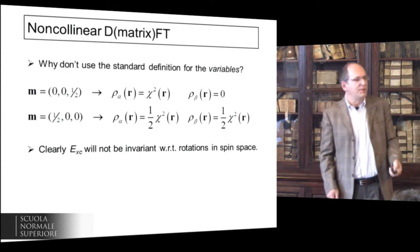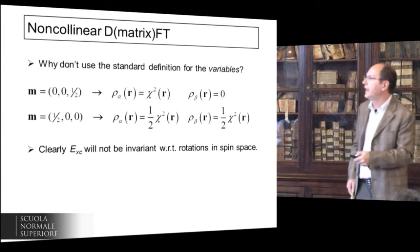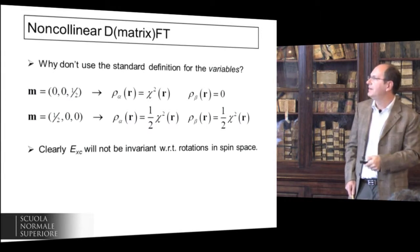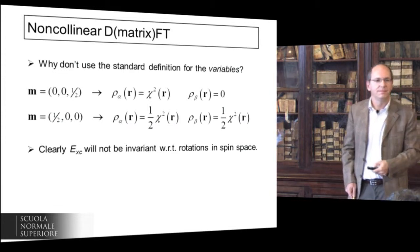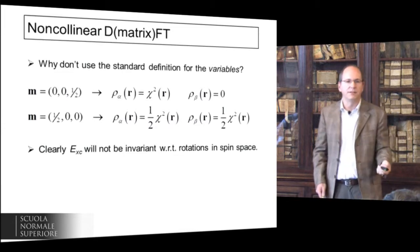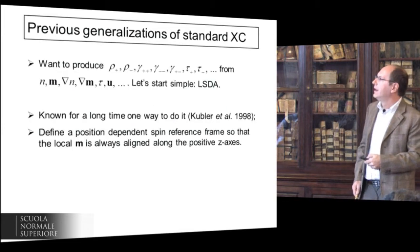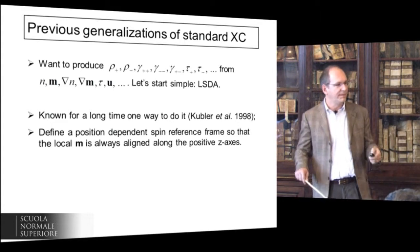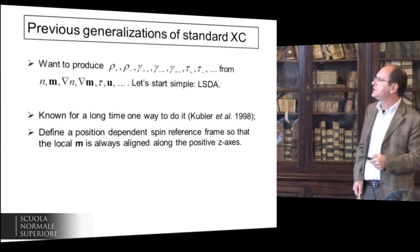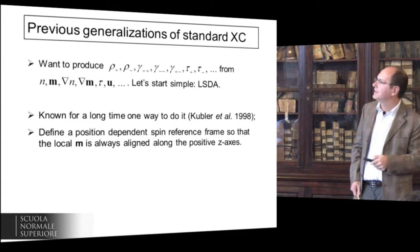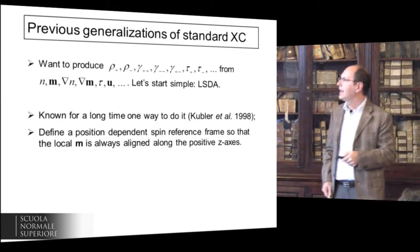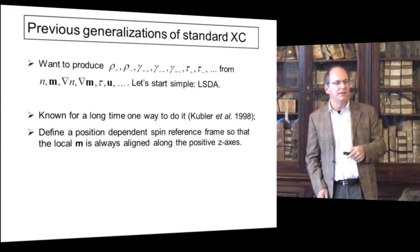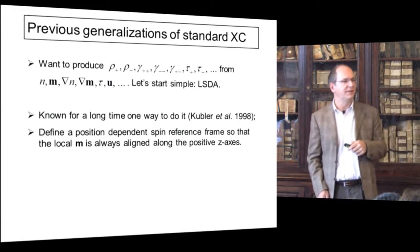Why can't we use the standard definition of variables for non-collinear calculations? Because the two states that are supposed to be equivalent will give completely different ρ_α and ρ_β — so if you put these two into the functional, you get two different numbers. In the solid-state physics community it has been known for a long time how to do LDA: it's the so-called Kübler trick or Kübler rotation. Since the energy doesn't depend on the orientation of the spin frame in the absence of spin-orbit, you just locally redefine your spin frame everywhere so that the local magnetization is aligned along the positive z-axis.